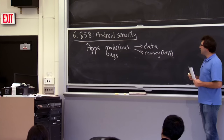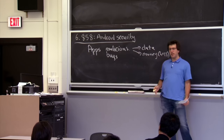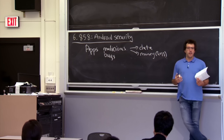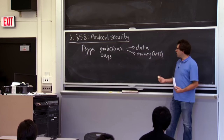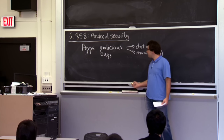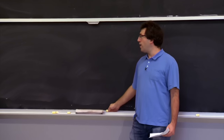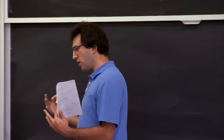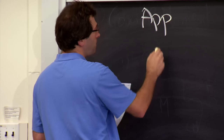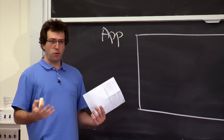One way to approach protecting data and services from malicious applications is to first understand what an application looks like in an Android system. Android applications are quite different from desktop apps or web applications. Instead of being a monolithic piece of code with a main function that runs forever, they're actually much more modular. The application in Android is a collection of components.